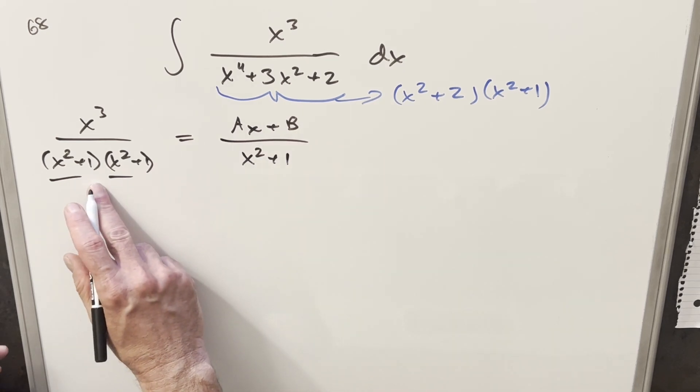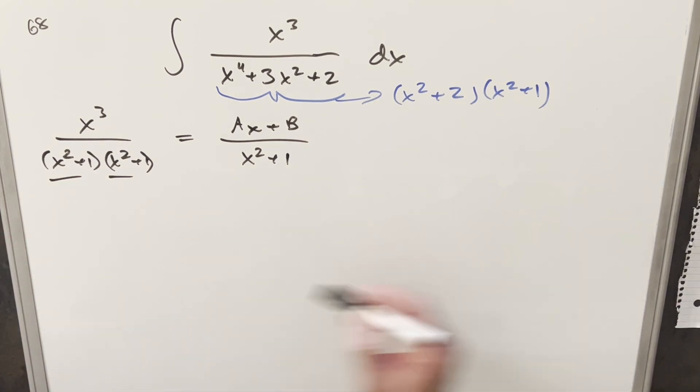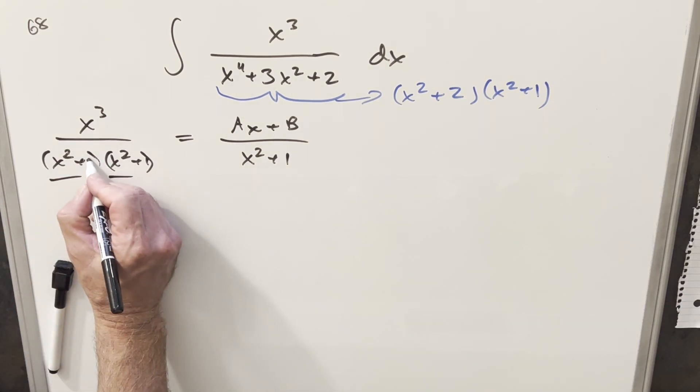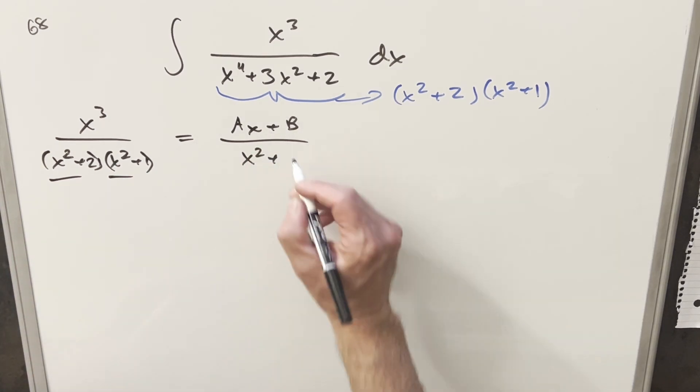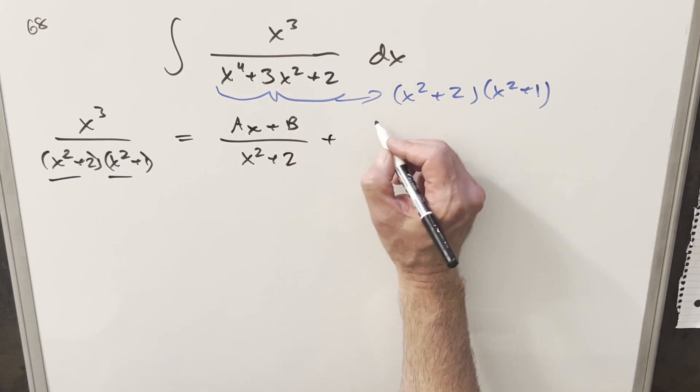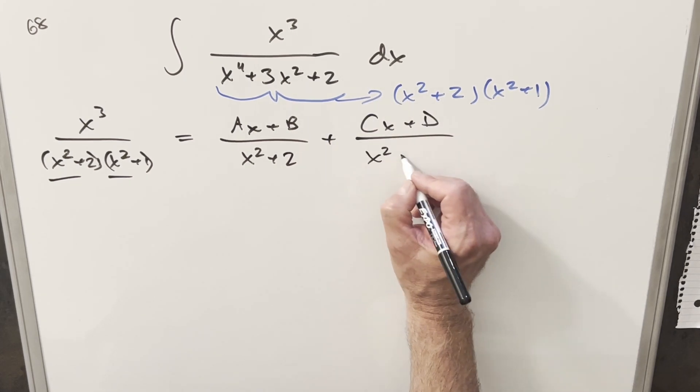Oh, I got the same. Actually, I have the same thing here in both of them, so let me fix this. Notice this first one is going to be x squared plus 2, right? And then the second one is going to be x squared plus 1. So let's make this x squared plus 2 here. And then for the second fraction, we'll have it as cx plus d over x squared plus 1.